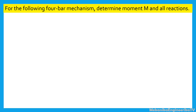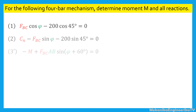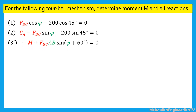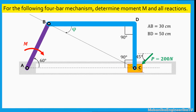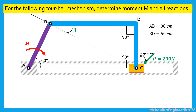Now we have established three equations involving three unknowns: the moment M and two reactions, FBC and CN. It is then possible to solve these equations. Before doing so, we need first to determine the angle phi.